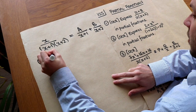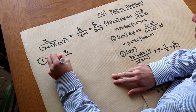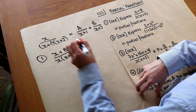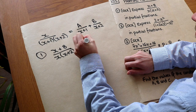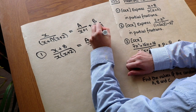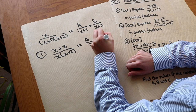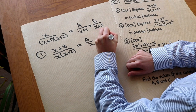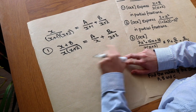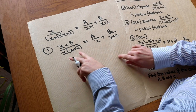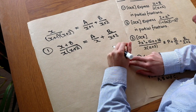We've got (x+8) over x(x+2), and we're going to write it as A over x plus B over x+2. What we then do to establish what A and B are, we want to initially multiply through by x and x+2 so we don't have to worry about fractions anymore.